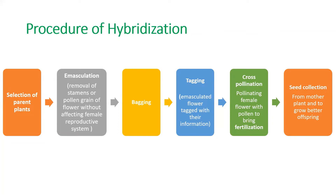Next we do bagging, which means covering the emasculated flower. Next is tagging — we tag the emasculated flower with a label containing its information. Then comes cross-pollination, which means pollinating the female flower with the pollen grains of our choice, the variant we want, thereby bringing that pollen to carry out fertilization.